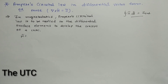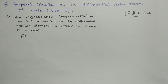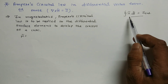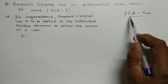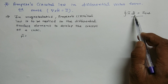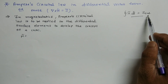Hello everyone. Today we will cover Ampere's Circuital Law in Differential Vector Form, or prove that del cross H bar is equal to J bar. In magnetostatics, Ampere's Circuital Law is applied to a differential surface element to develop the concept of curl. We know that the Ampere Circuital Law is: closed integral of H bar dot dL bar is equal to I enclosed.